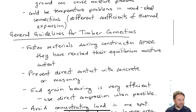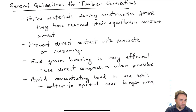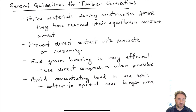Now I want to cover some general guidelines — things we should consider and avoid when making timber connections. One key point is that moisture problems can be at least partially mitigated by making sure that when we form the connections, our timber has more or less reached a reasonable equilibrium moisture content similar to what it will be in service.